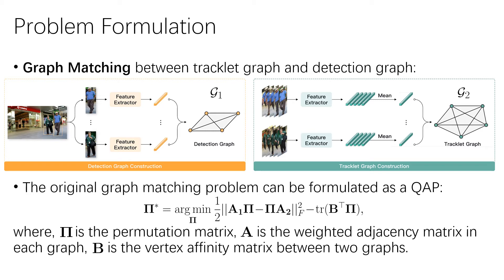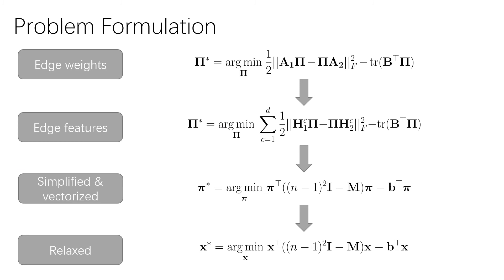We describe how to formulate MOT as a tracklet-to-detection graph matching problem and how to relax the original QAP to a convex and continuous QP. First, we construct the detection graph. The vertex feature is the appearance feature and the edge feature is the concatenation of the vertex features. To construct the tracklet graph, we average the appearance features of the tracklet as the vertex feature. The original graph matching problem can be defined as a QAP mathematically. The optimization objective is to minimize the edge-to-edge cost and the vertex-to-vertex cost, corresponding to two terms in the equation. In the MOT task, the edge weight is not enough to model the intra-graph relationship, so we expand the formulation from edge weights to edge features. Via simplifying and vectorizing the second equation, we obtain the third equation. Finally, we relax pi from a permutation matrix to a bistochastic matrix.